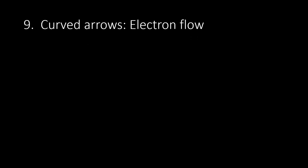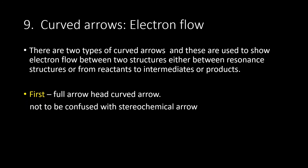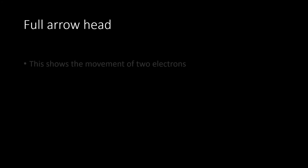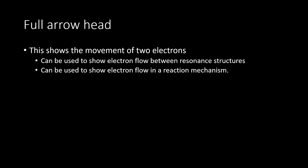Number 9: curved arrows to show electron flow. There are two types of curved arrows, used to show electron flow between two structures — either between resonance structures, or from reactants to intermediates, or from intermediates to products. First, the full arrowhead curved arrow, not to be confused with a stereochemical arrow. The other type is the half arrowhead, the so-called singly barbed arrow, which represents a single electron for radical reaction mechanisms. The full arrowhead shows the movement of two electrons and can be used to show electron flow between resonance structures or in a reaction mechanism.